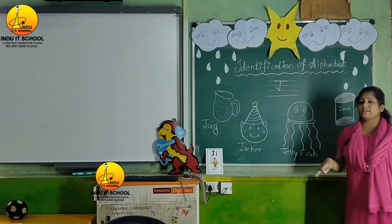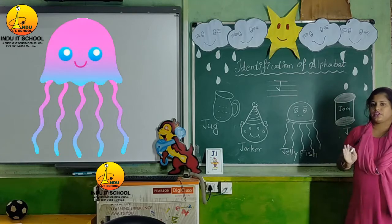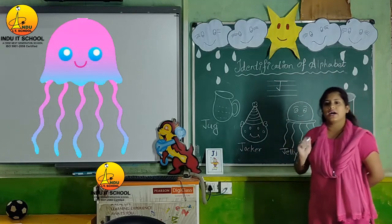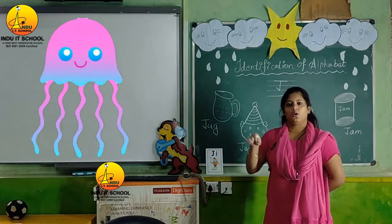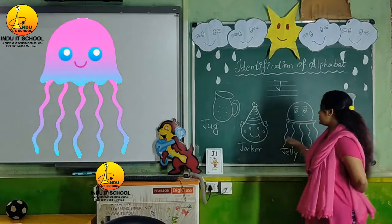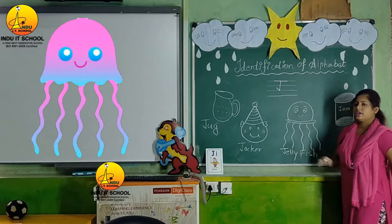The third object is jellyfish. Jellyfish lives in the water and sea. J for jellyfish.